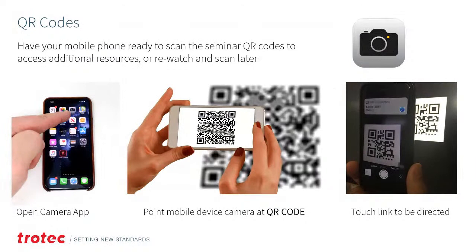This seminar has many different QR codes. If you have questions about finding different locations and resources, open up your phone's camera app and point it at the QR code — you don't need to take a photograph. It'll take you to links, websites, images, files, and digital content you can access. Keep your phone handy or re-watch and scan these at a later date.